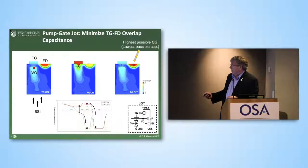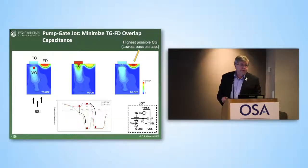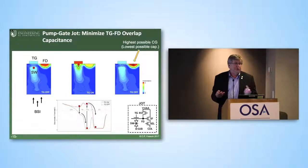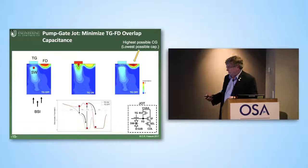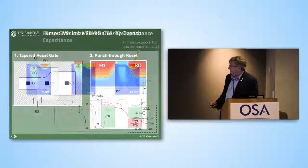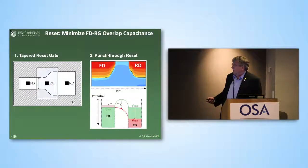Also attached to the sense node floating diffusion is a source follower for the in-pixel amplifier, and a reset gate to reset this. Most of the noise comes from the 1/f noise in the source follower, so we're trying to get above that. Most of the capacitance also comes from the source follower — so if you reduce the source follower the 1/f noise goes up and you shoot yourself in the foot. We've switched to looking at JFETs, but we focus on getting rid of the other parasitic capacitances. For the reset gate we looked at a tapered reset gate and a punch-through reset — both work pretty well.